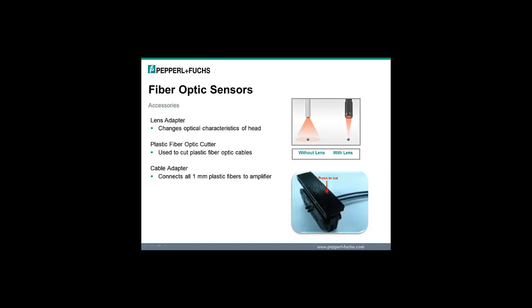Accessories used with fiber-optic cables include lens adapters, which change the optical characteristics of a glass or plastic fiber-optic head — typically increasing range or changing the diameter of the light spot. Plastic fiber-optic cutters are used to cut plastic fiber-optic cables to different lengths. Cable adapters are used to connect all one millimeter bundle diameter plastic fiber-optic cables to a fiber amplifier.